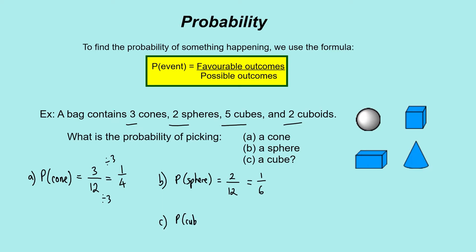Finally, for part C, we've got a cube. So the probability of picking a cube is going to be 5 out of 12, and that doesn't simplify because 5 is a prime number and 12 is not in the 5 times table. So 5/12 is our final answer for the probability of picking a cube.